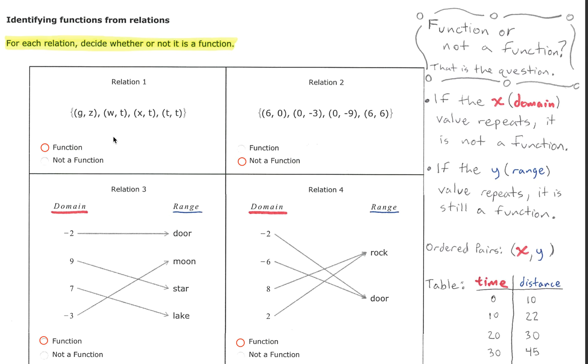Now looking at relation 1 our goal is to decide whether we have a function or not, and again we do that by determining whether or not the x value repeats. Let's take a look at the x values here. The x values are G, W, X, and T. None of those repeated therefore we do have a function.